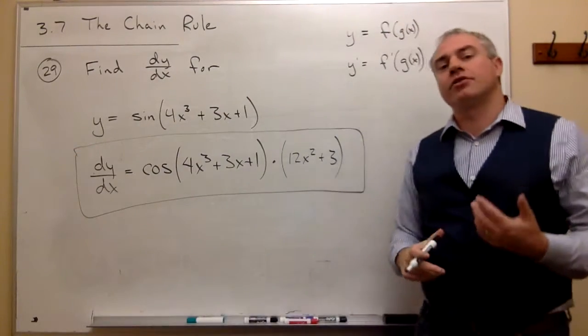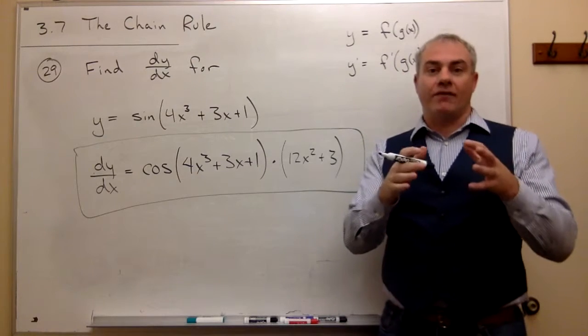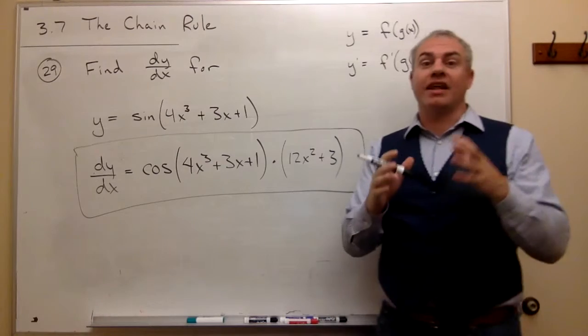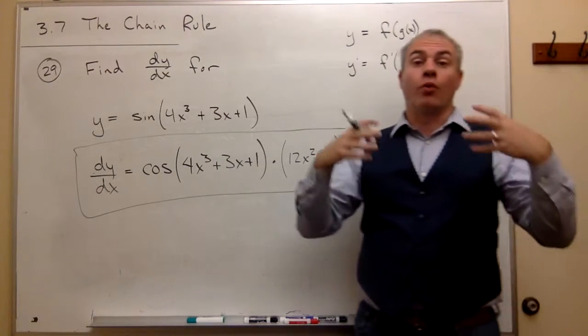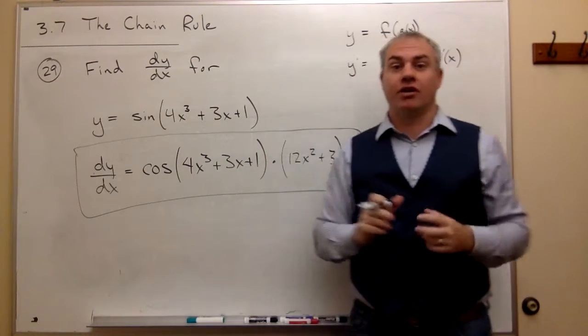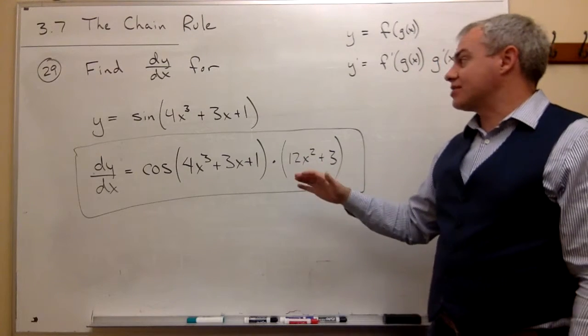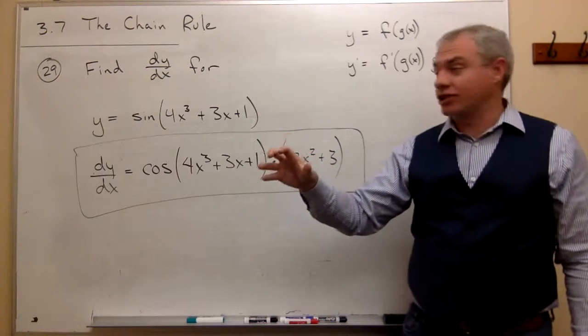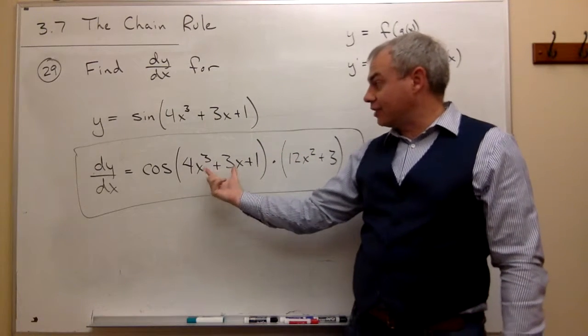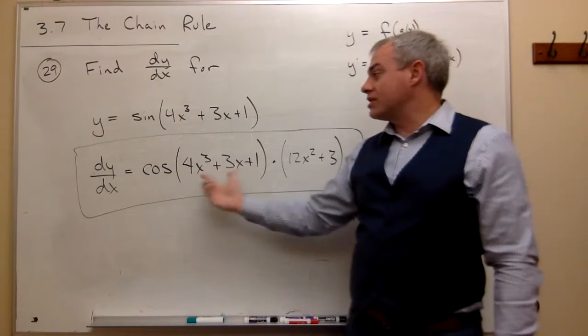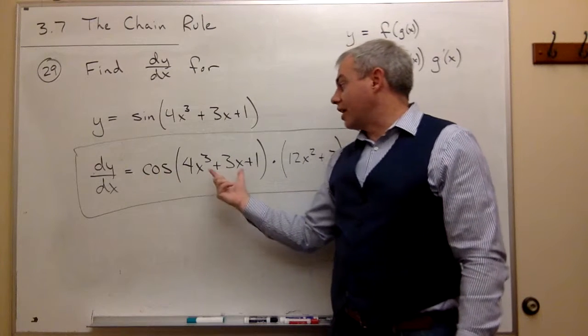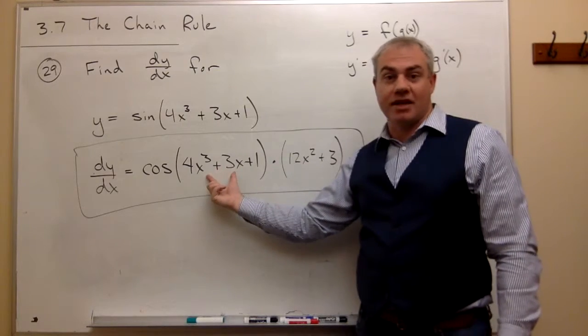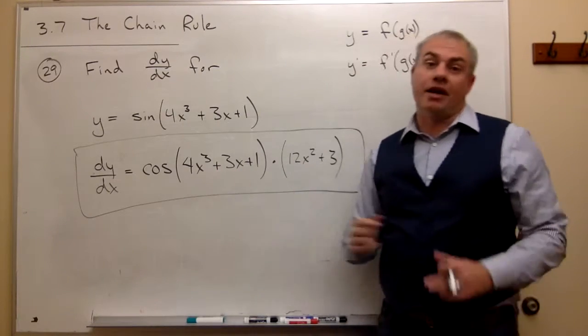So remember, when we're taking the derivative using the chain rule, we have to find what's the outermost thing. Okay, what's the thing that happens last? Or what's the outside function? Once we have the outside function, then I can ask the question, okay, what's the derivative of that outside function with the inside left alone? Then once I've done that, and I have cosine of the inside function, then I multiply by the derivative of the inside function, and then I'm done.